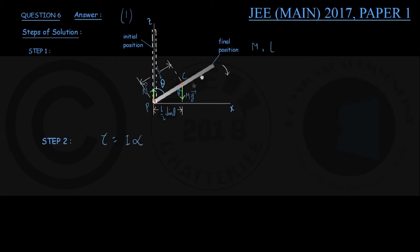So in this case, since the rod is rotating about a horizontal axis passing through the pivot P, we can write down that tau P—that is, the torque about the point P—must be equal to I P, the moment of inertia of the rod about the point P, into alpha. Let me call this equation number 1 for future reference.